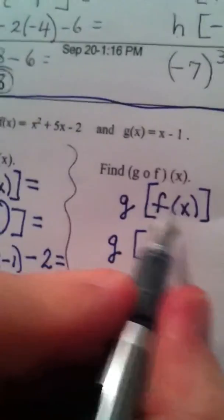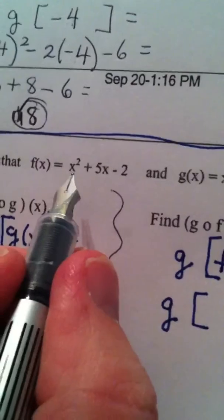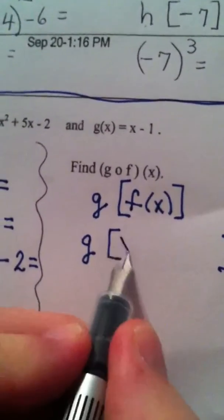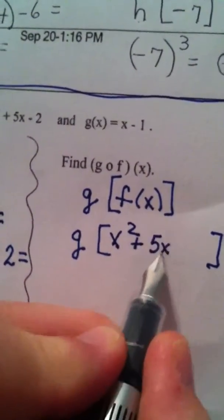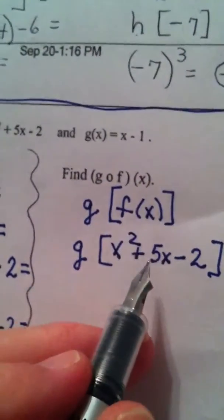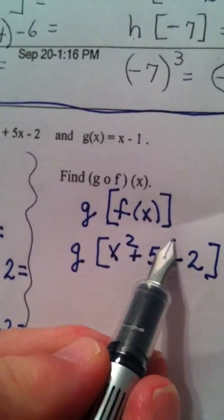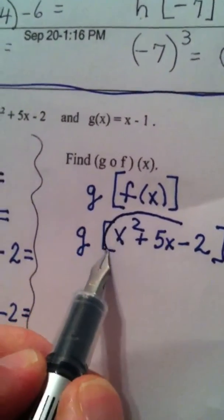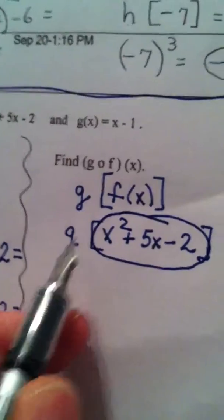So, f of x is right there, x squared plus 5x minus 2. So, that's what f of x is. Now, all of this gets put into function g.